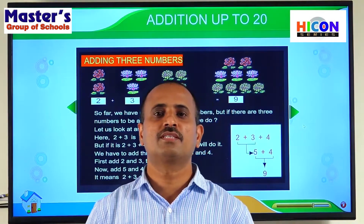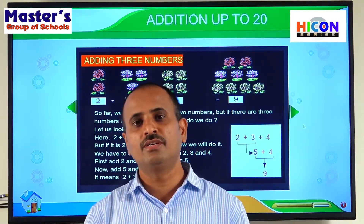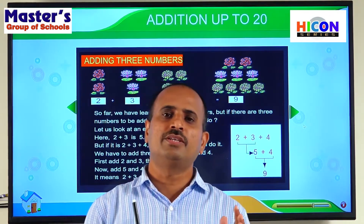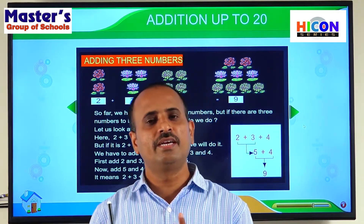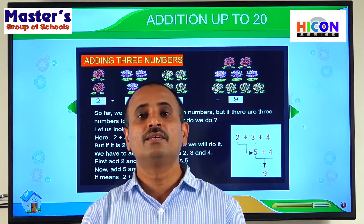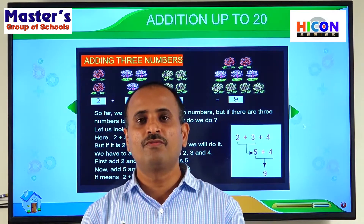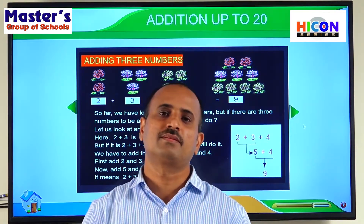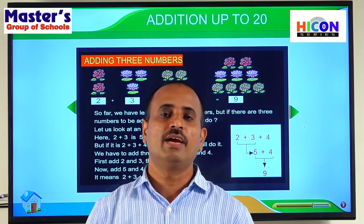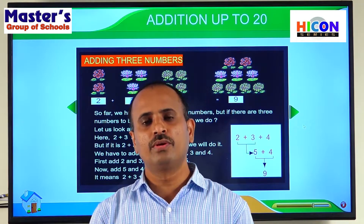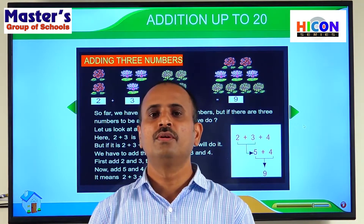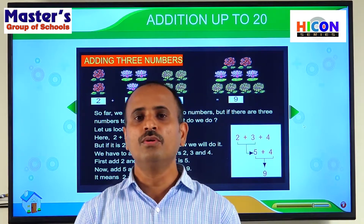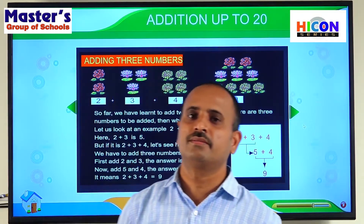Up to now we have discussed horizontal addition and vertical addition. In both, we have practiced the sum of two digits, that means the sum of two numbers. So we have practiced how to add two numbers up to now. The next topic in this chapter is how to add three numbers.